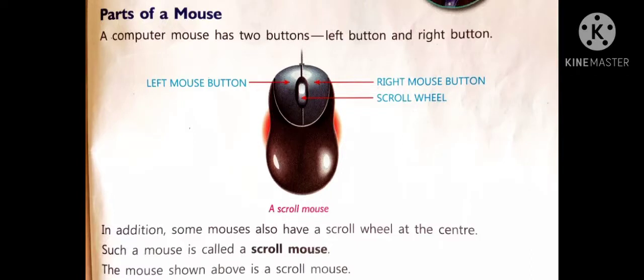Parts of a mouse. A computer mouse has two buttons: left button and right button. In addition, some mouses also have a scroll wheel at the center. Such a mouse is called a scroll mouse.